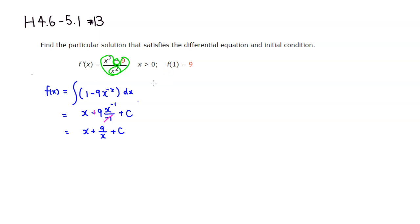We can use the initial value condition to find the value of c. We have f of 1, so plug in 1 for x. It's going to be 1 plus 9 over 1, plus c, so this is 1 plus 9, which is 10 plus c.